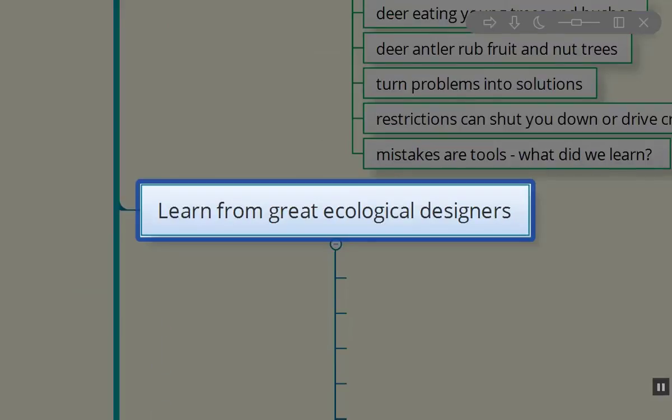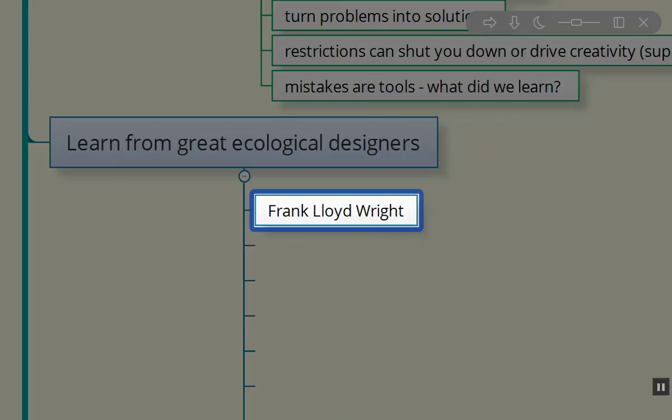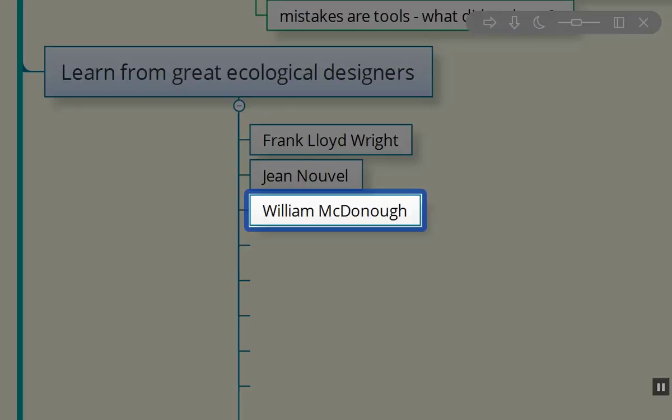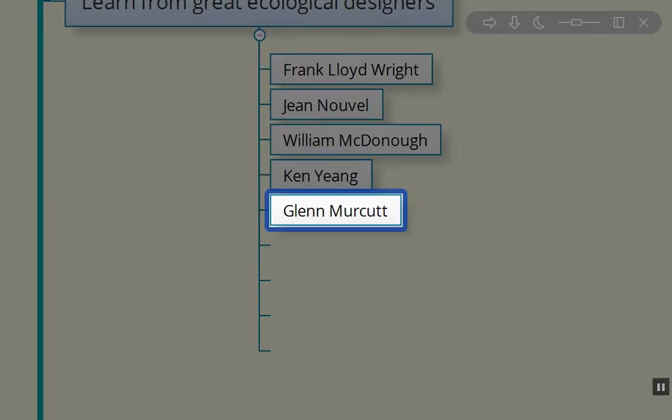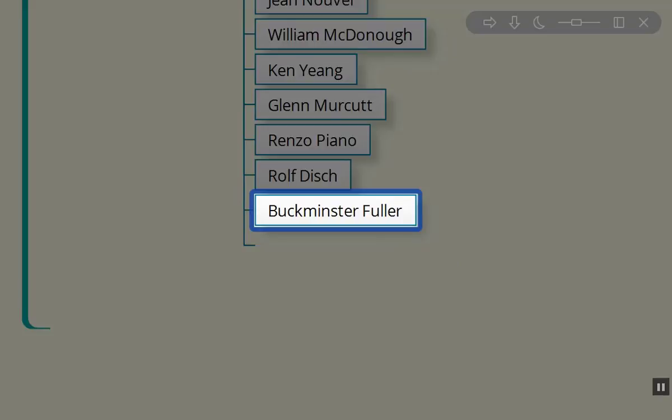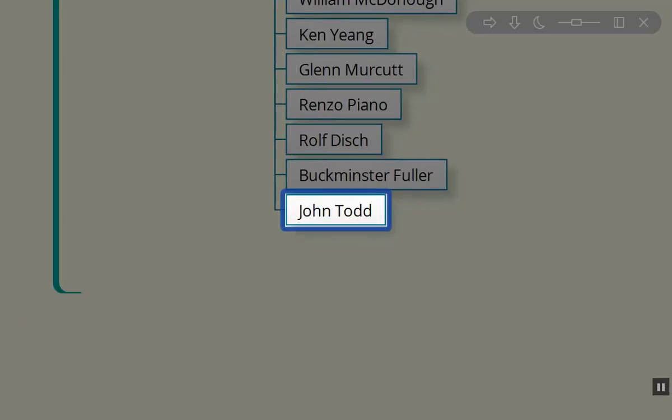So this took quite some time. So there are some other really well-known ecological designers, and I'm just going to name drop them right here because I think they're really good people to get some ideas and incentives from. So, Frank Lloyd Wright, Jean Nouvel, William McDonough, Ken Yang, Glenn Murcutt, Renzo Piano, Rolf Disch, Buckminster Fuller, and John Todd.